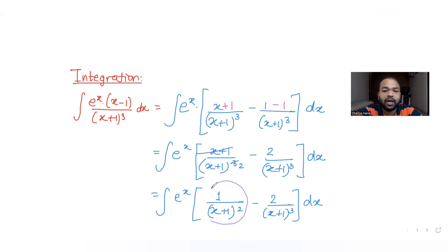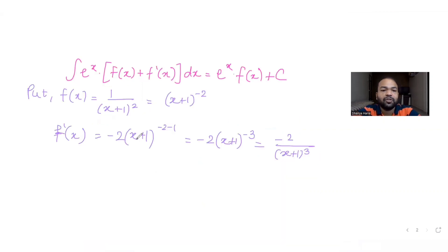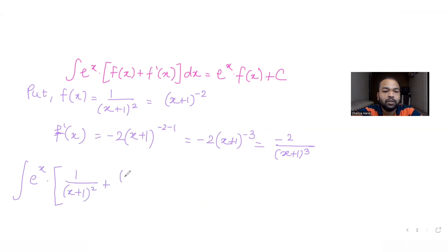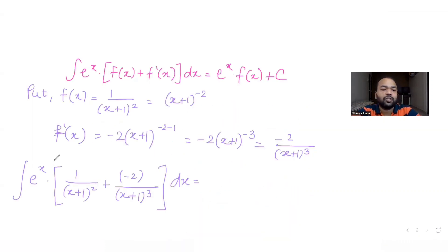So we have put 1 upon (x plus 1) squared as f(x), and minus 2 upon (x plus 1) the whole cube comes out as f'(x). Now I can write my entire expression as the integral of e raised to x into 1 upon (x plus 1) the whole square, plus minus 2 upon (x plus 1) the whole cube, dx. Writing it in the format of e raised to x into [f(x) plus f'(x)] dx, I can write my answer as e raised to x into f(x) plus C.